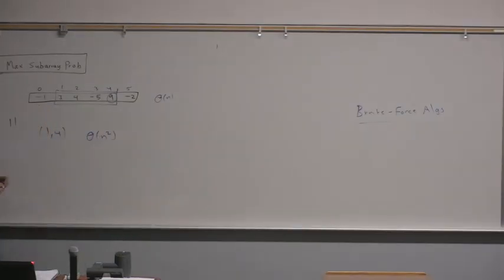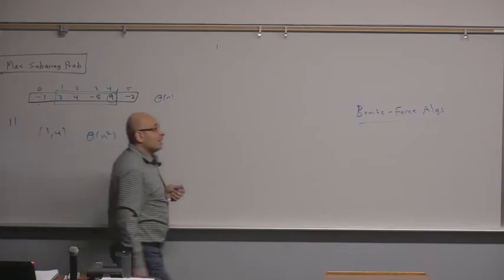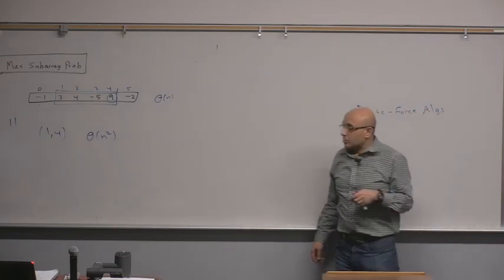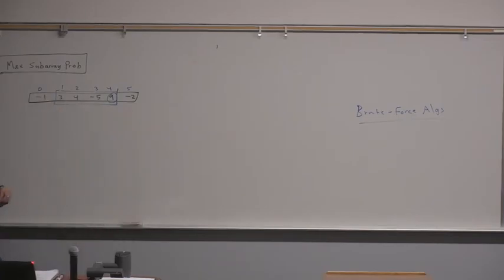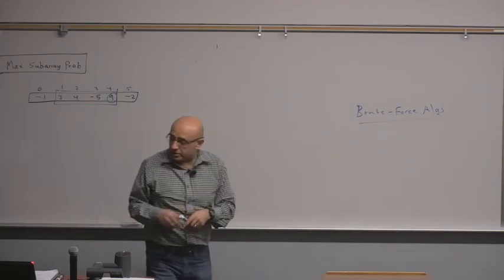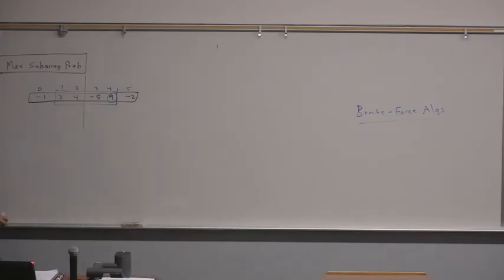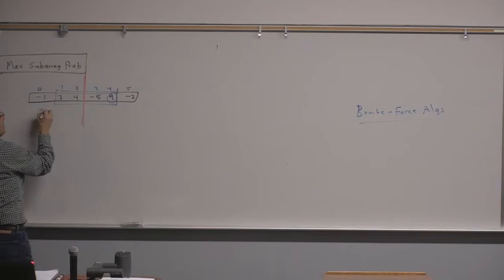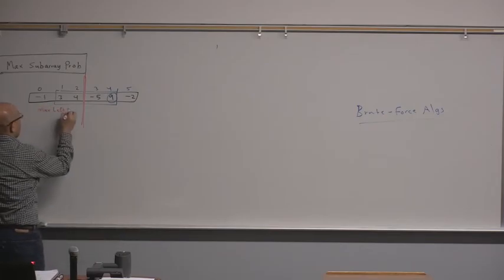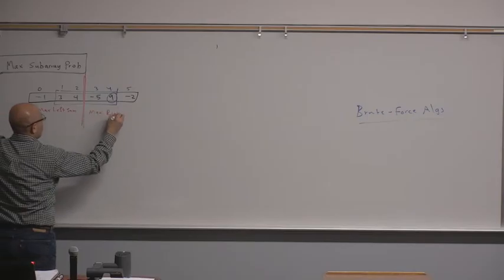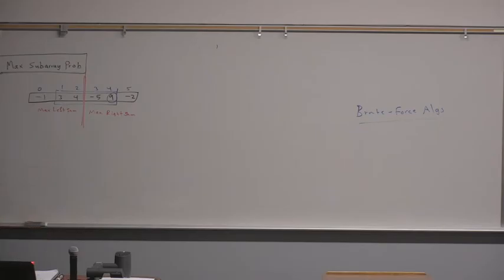This is brute force, but we would like to find a more efficient algorithm using divide and conquer. The first attempt: break the array — just cut it in half. So we try a divide and conquer approach, splitting the array into two equal subarrays. If I find the maximum left sum and the maximum right sum, will that be sufficient to solve the problem?